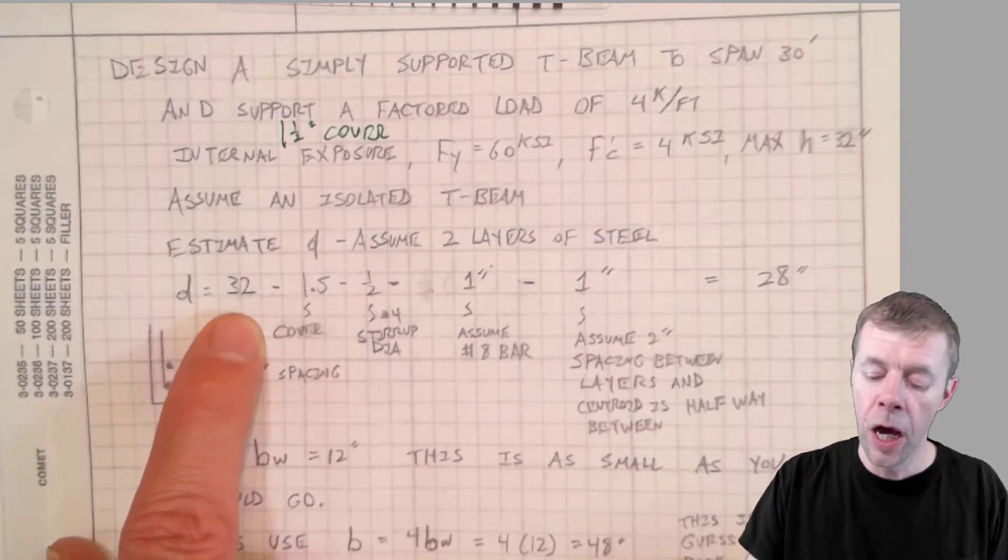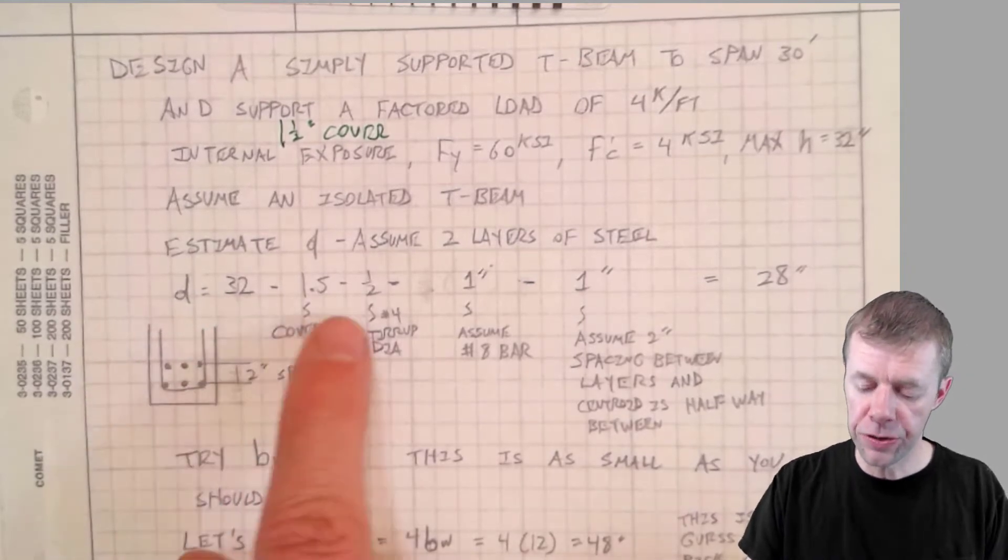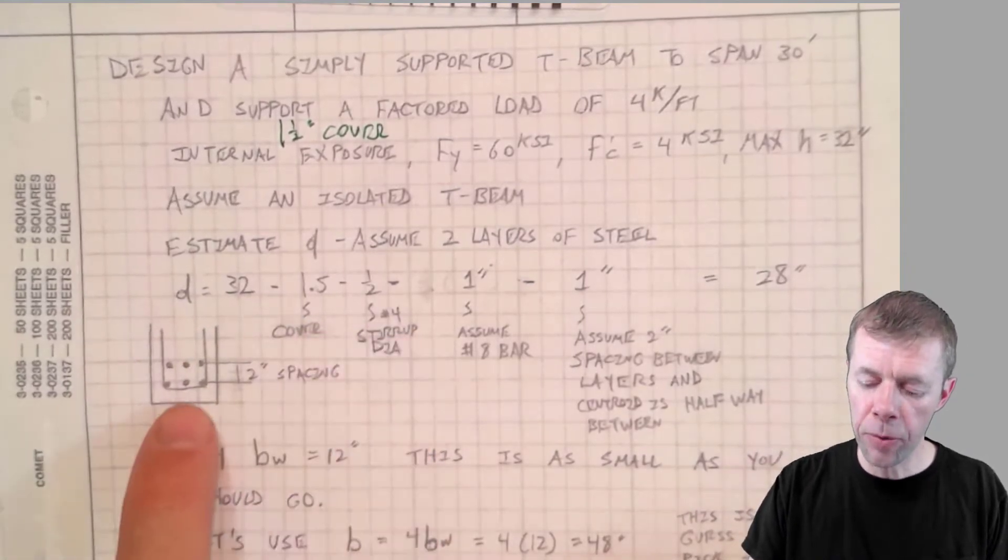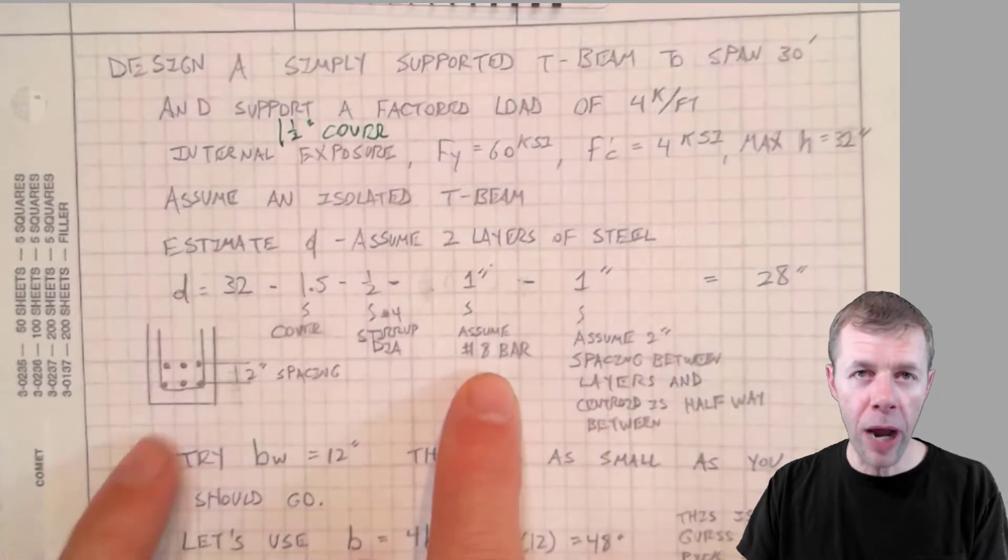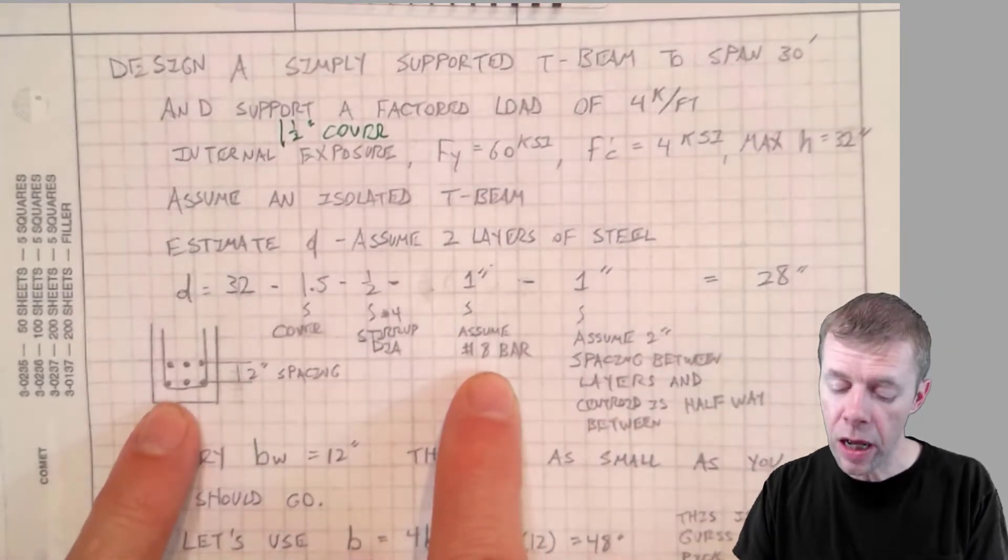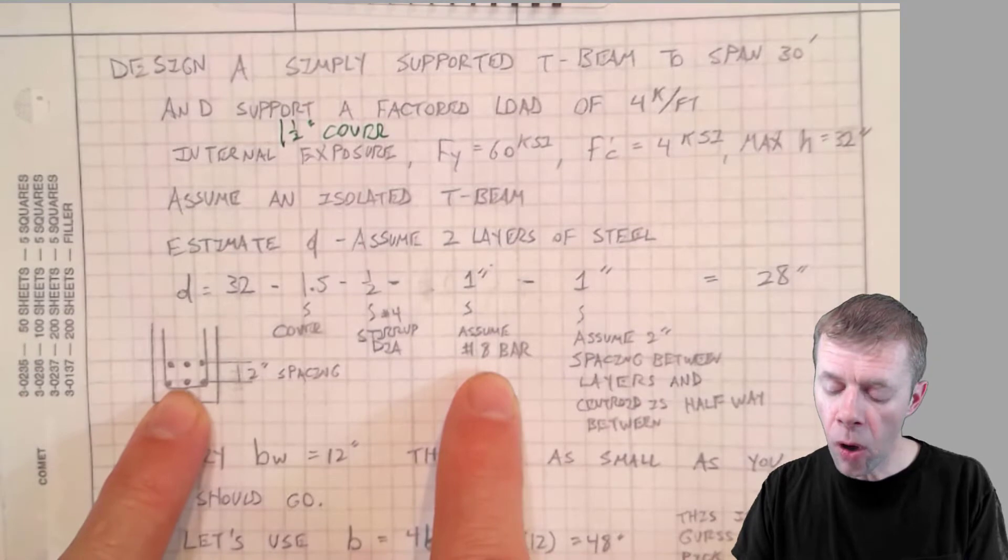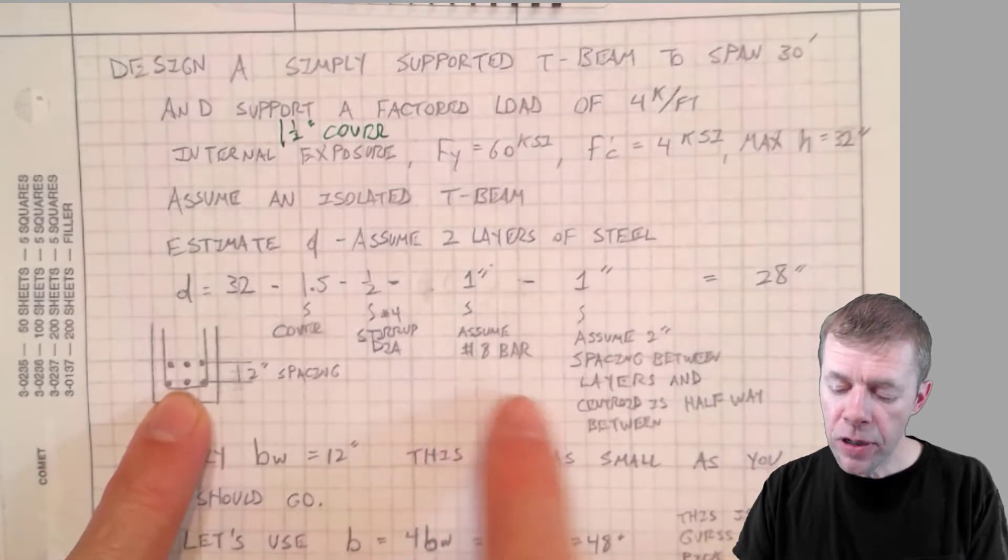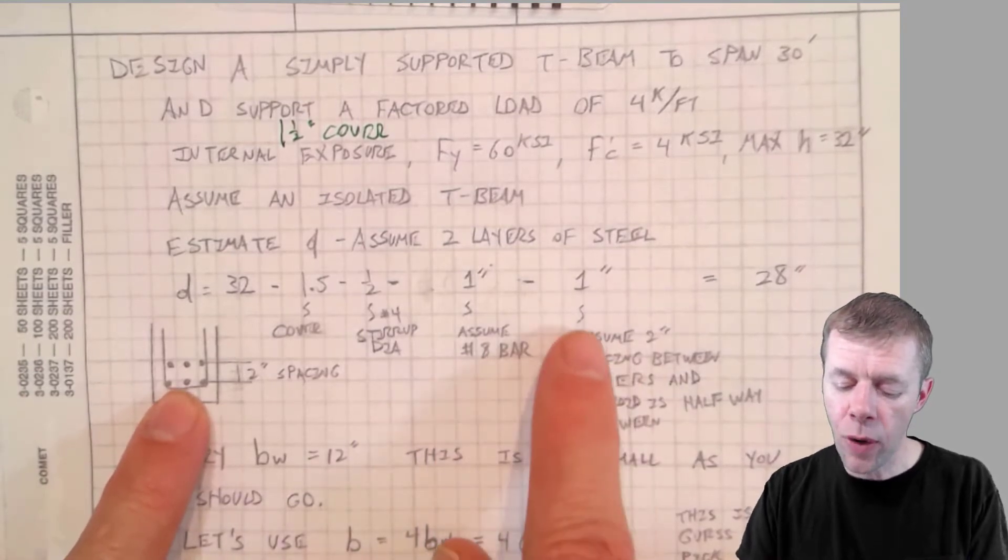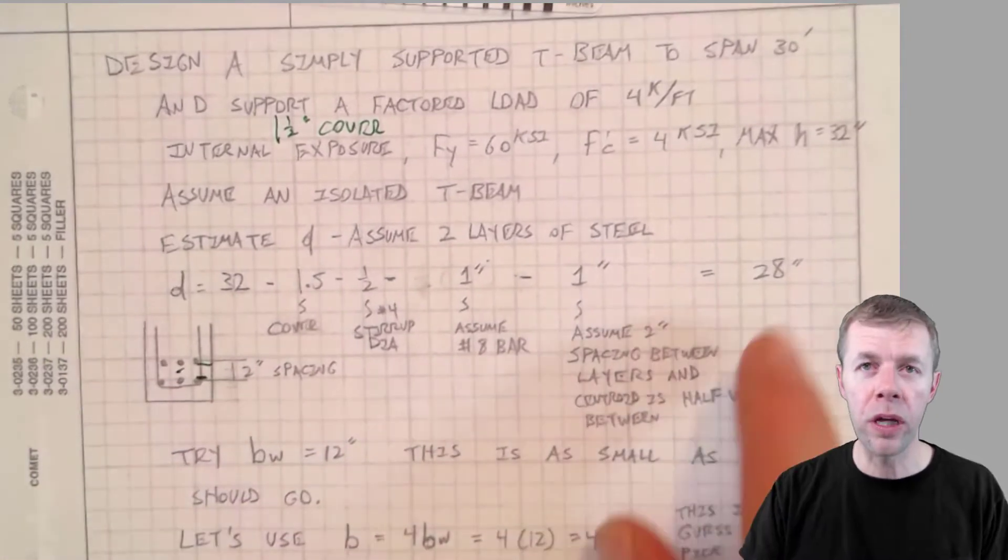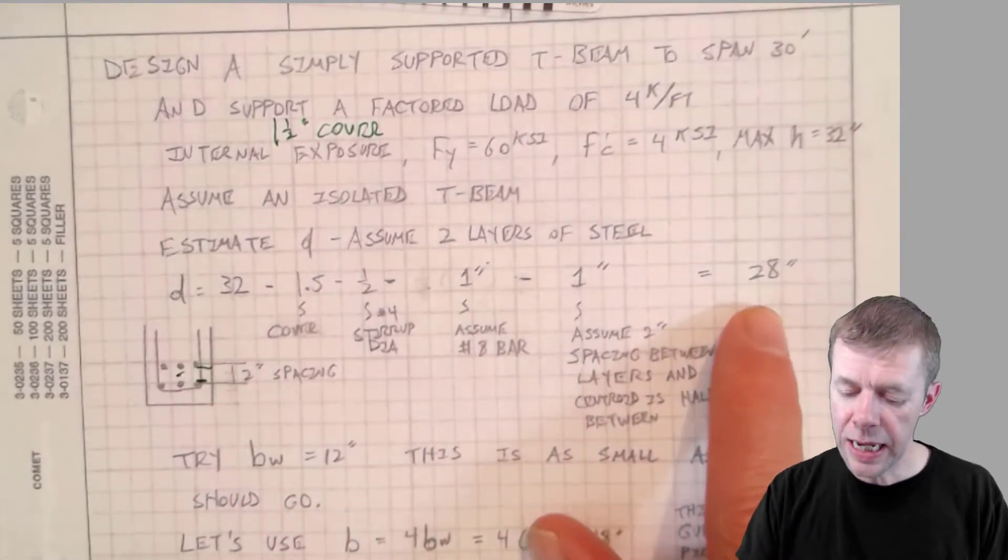My total height is 32 inches. My cover, that's one and a half inches. I have one stirrup I'm going through, I'm gonna assume a number 8 bar. I'm gonna go through one bar. And then I'm gonna assume one inch spacing till I can go to the center of the cover. And that all gives me about 28 inches for my D.